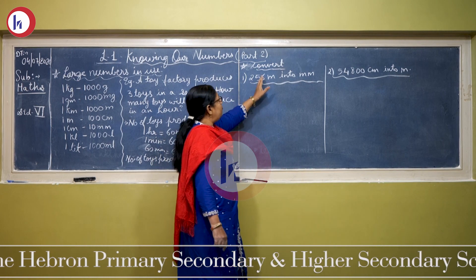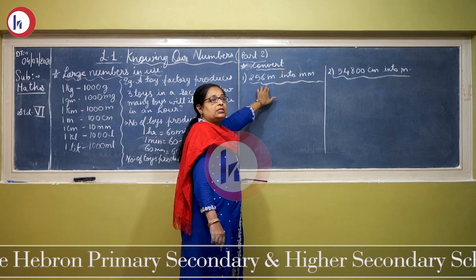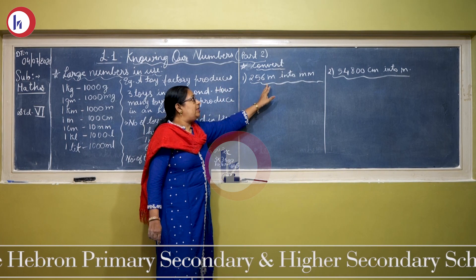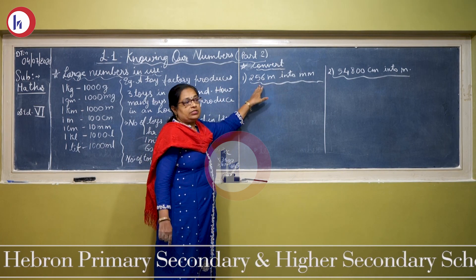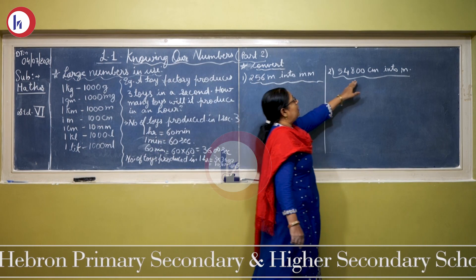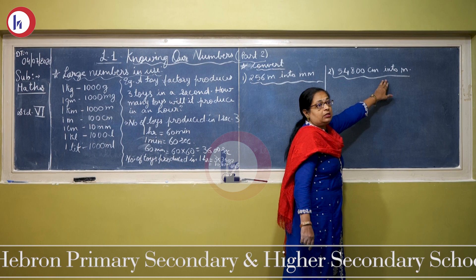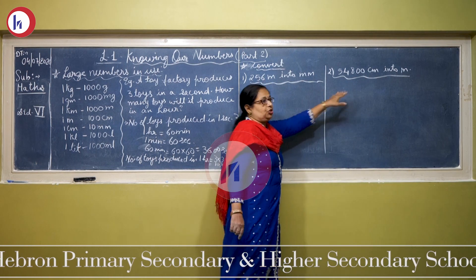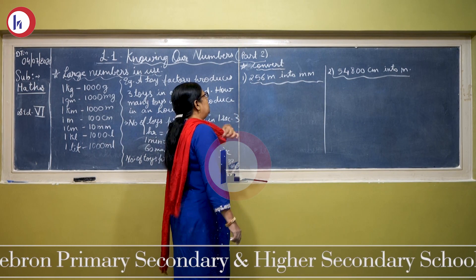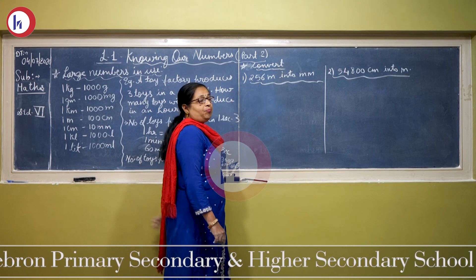Now to convert meters into centimeters — meter is a larger measurement. So to convert the larger measurement into smaller measurement, we always do multiplication. Same way, if you want to convert the smaller measurement into larger measurement, we always do division. So here first we will take 256 meters into millimeters.